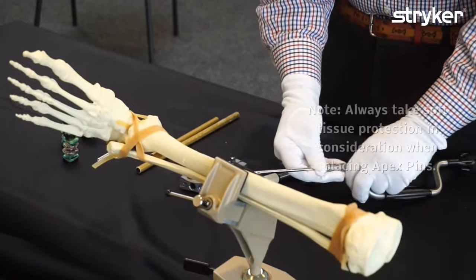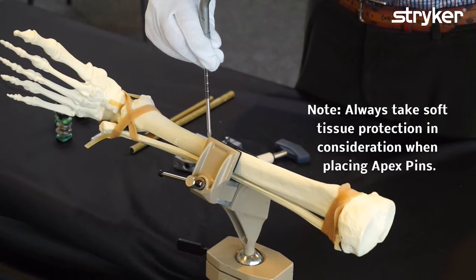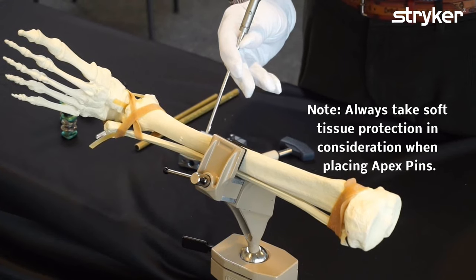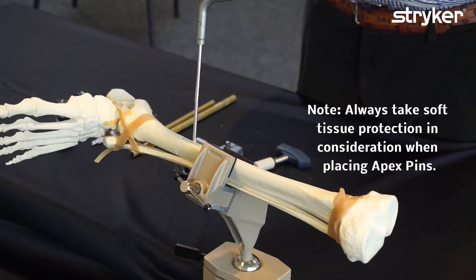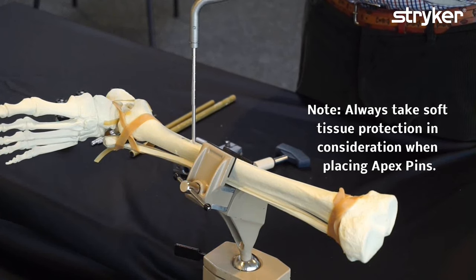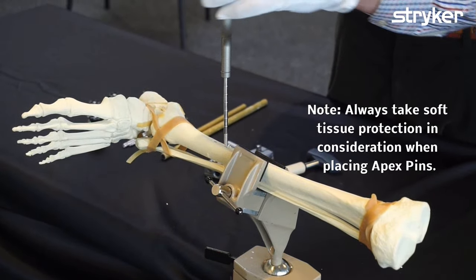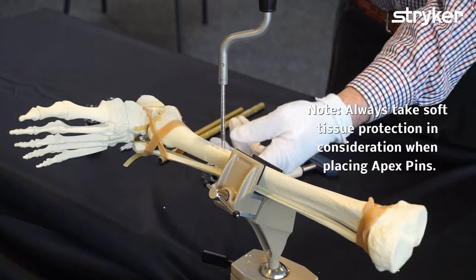A very common mistake is to put the pins too vertically, like this. They should really be bent a little bit so that they pass through the medullary canal - a little bit bent up, but not too much. That's distal to the fracture. You can feel the far side with this plastic bone very nicely.